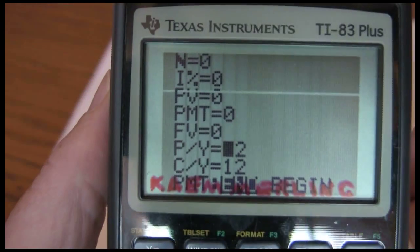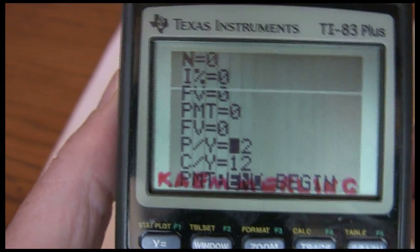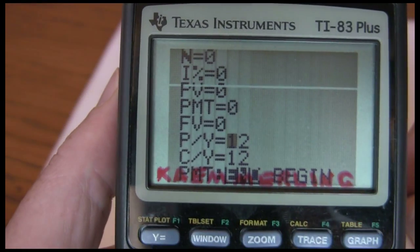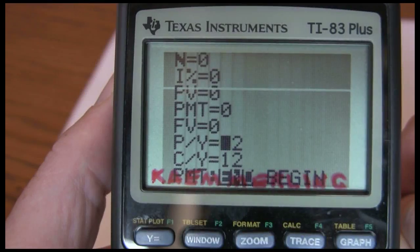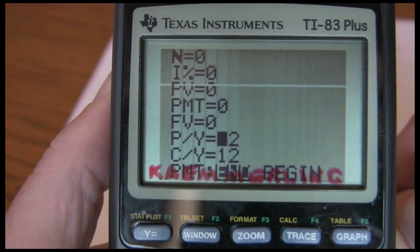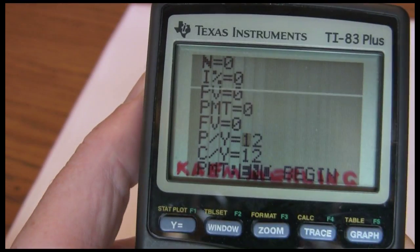Notice on my calculator it's set up right now for 12. 12 is monthly compounding. That works great for car payments or mortgage payments. But in this problem we want it to be 1 period per year. So we're just going to set that to 1.